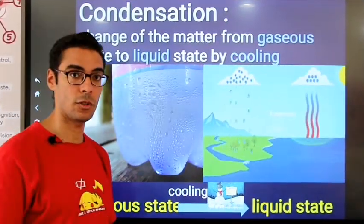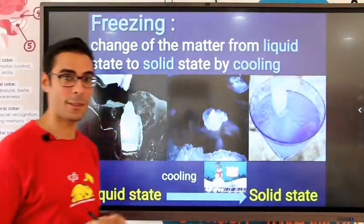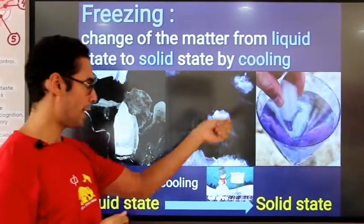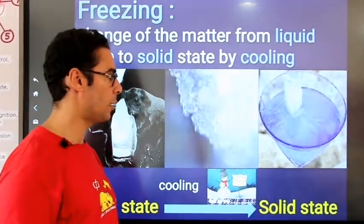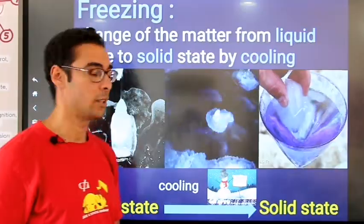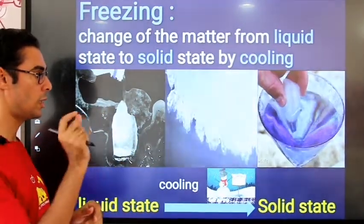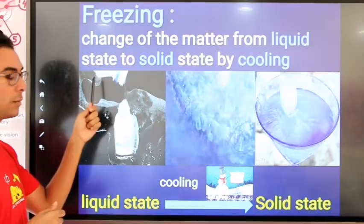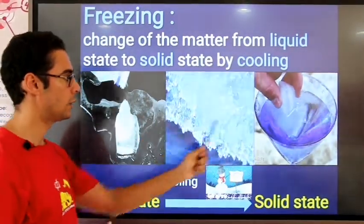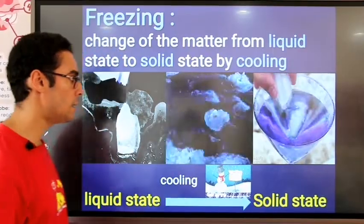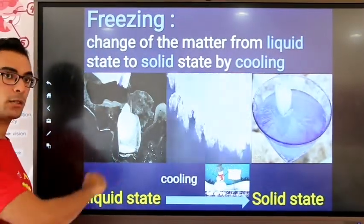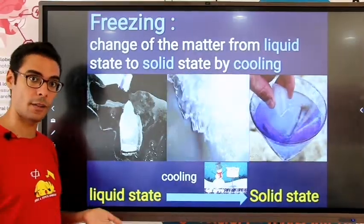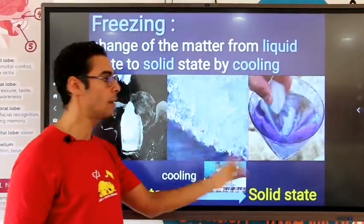But do we have other changes that happen by cooling? I guess the answer is yes. We have liquid water here, liquid water there — but they are no longer water. They have been changed completely into solid crystals of ice. The water becomes ice — the liquid becomes solid. So when we keep cooling the matter, it changes completely from liquid state into solid state. We call this actually freezing. It's the change of matter from the liquid state into solid state by cooling.